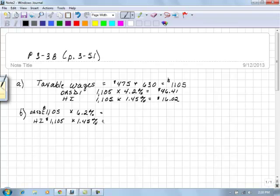With this, we have $68.51 for the employer's OASDI tax. Notice that the amount for HI is the same because the rates are the same.